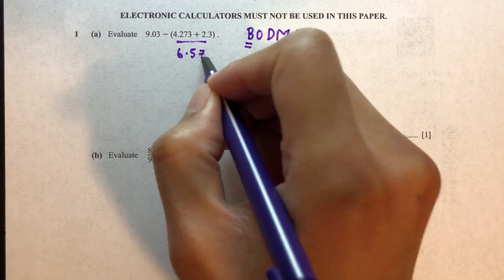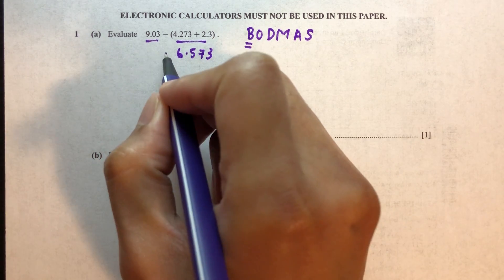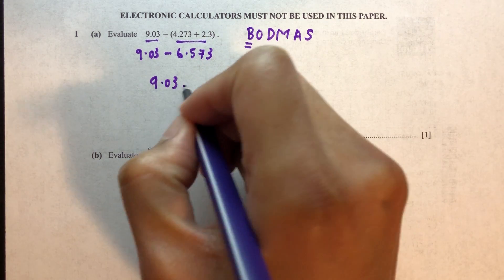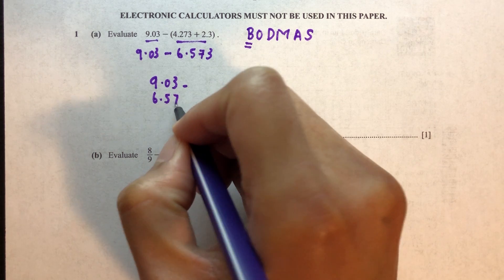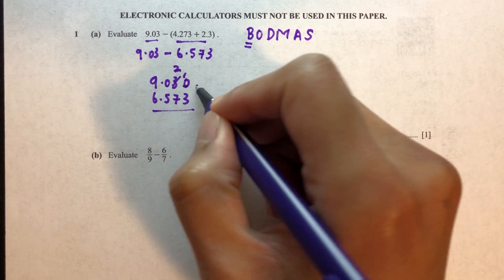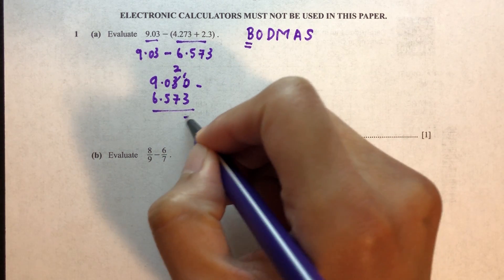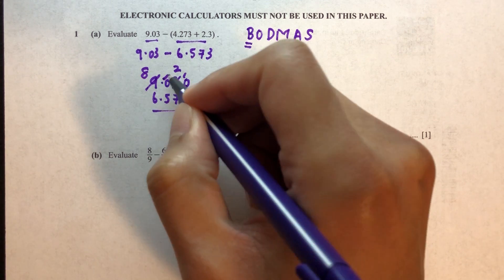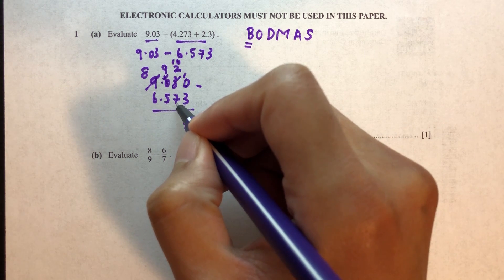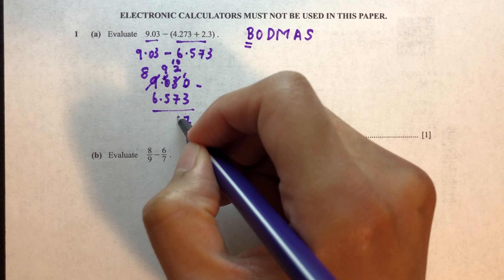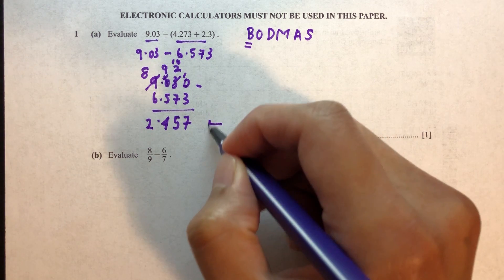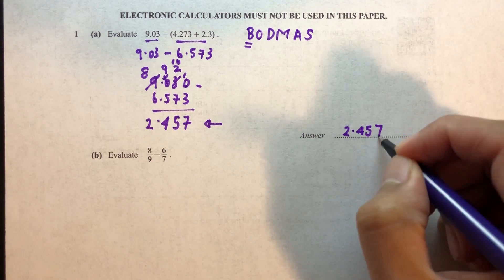That gives us 6.573. Now we can do the subtraction: 9.03 minus 6.573. Working through the column subtraction, 10 minus 3 is 7, 10 minus 7 is 3, 3 plus 2 is 5, 9 minus 5 is 4, 8 minus 6 is 2. So the answer is 2.457.